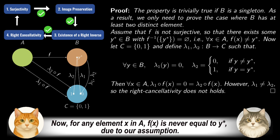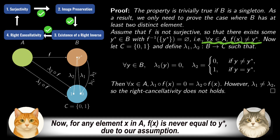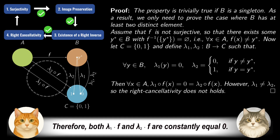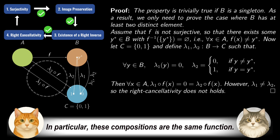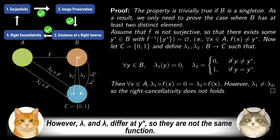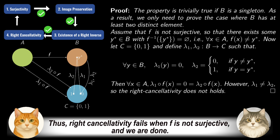Now, for any element x in A, f(x) is never equal to y*, due to our assumption. Therefore, both λ₁∘f and λ₂∘f are constantly equal to 0. In particular, these compositions are the same function. However, λ₁ and λ₂ differ at y*, so they are not the same function. Thus, right cancellativity fails when f is not surjective, and we are done.